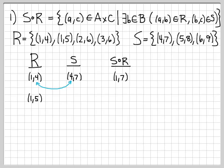We keep going. The element (1,5) is in R — is there an element in S that starts with 5? There is: (5,8). The interior 5s match, so (1,8) is an element of S∘R. Next, (2,6) is in R. Is there an element in S that starts with 6? Yes: (6,9). So (2,9) is an element of S∘R.